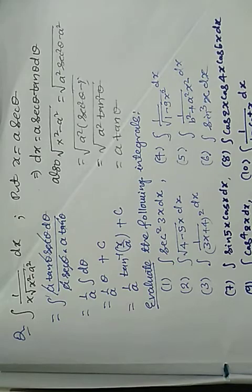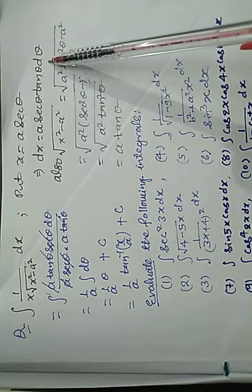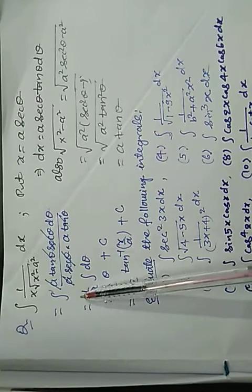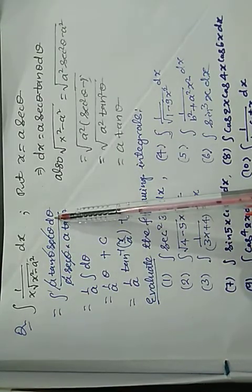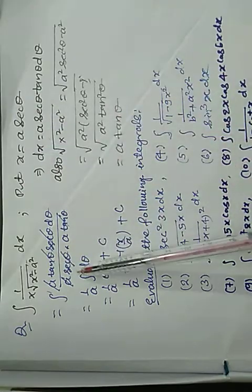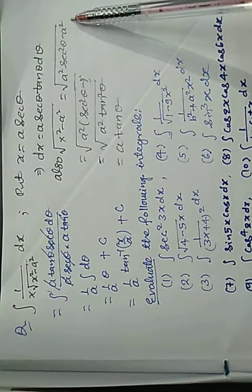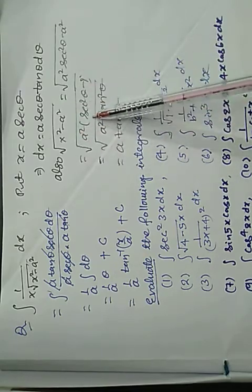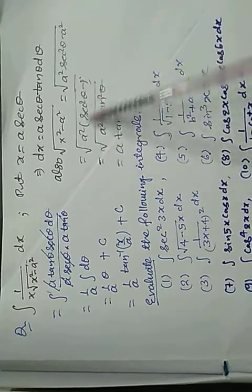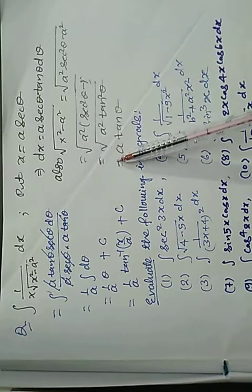Now, this is the next question: integration of 1 upon x root x square minus a square dx. For this purpose, if you put x equal to a sec theta, then dx equals a sec theta tan theta d theta. So, this integral equals a tan theta sec theta d theta whole upon x root x square minus a square. Here x is a sec theta, and root x square minus a square equals root a square sec square theta minus a square, that is square root of a square bracket sec square theta minus 1, which equals square root of a square tan square theta, that is a tan theta.